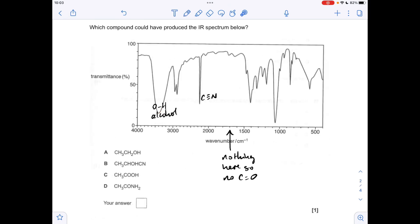Moving on to the next question, you can see I've already highlighted a couple of key absorptions. So we've got the OH of an alcohol, we've got the C triple bond N, so this is a nitrile group. I've also mentioned that we've got nothing at around about the 1700 mark, so there's no C=O. So what kind of compound is going to give us this spectrum?